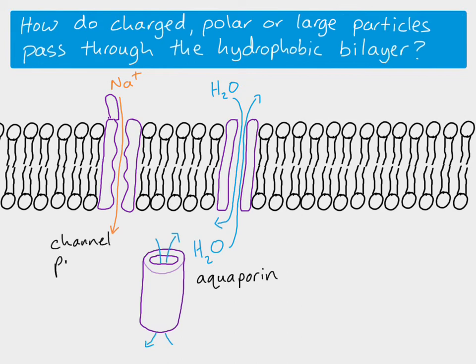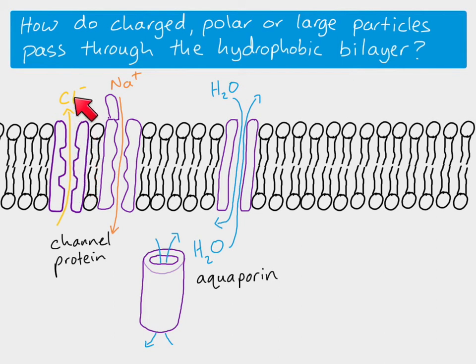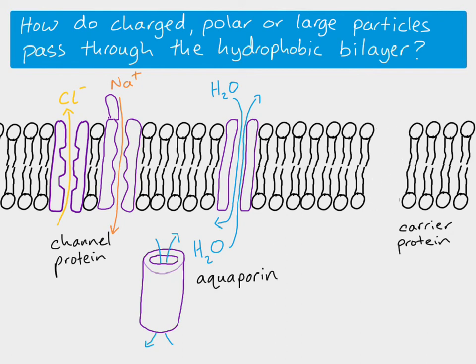Other ions have channel proteins specific to them. For example, this could represent a chloride ion channel — a different shape, specific to chloride — and it allows chloride to move out of the cell down its concentration gradient. So these are all channel proteins. We also have something called a carrier protein, which is very similar — it's a transport protein that spans the membrane.